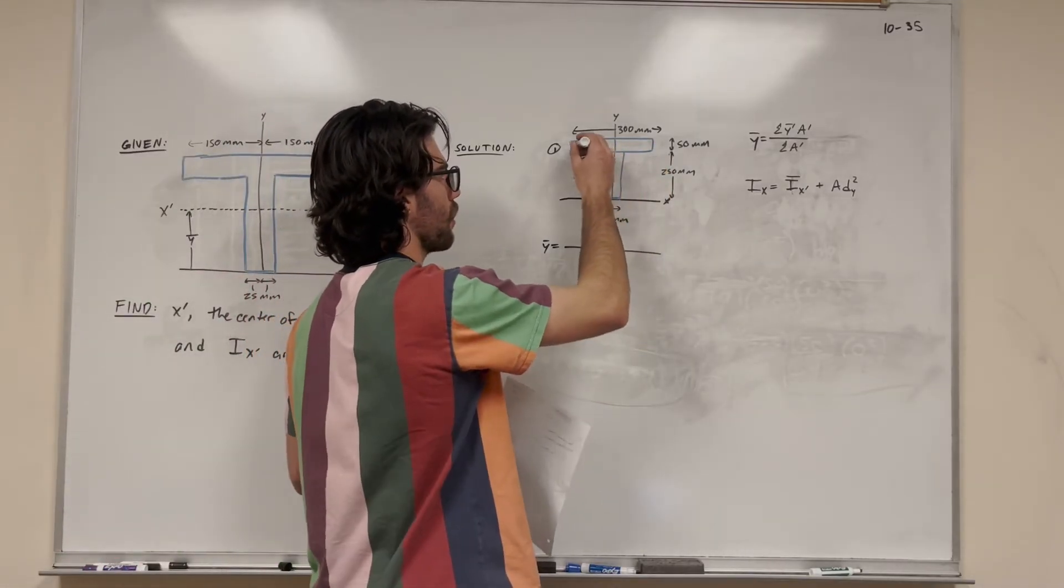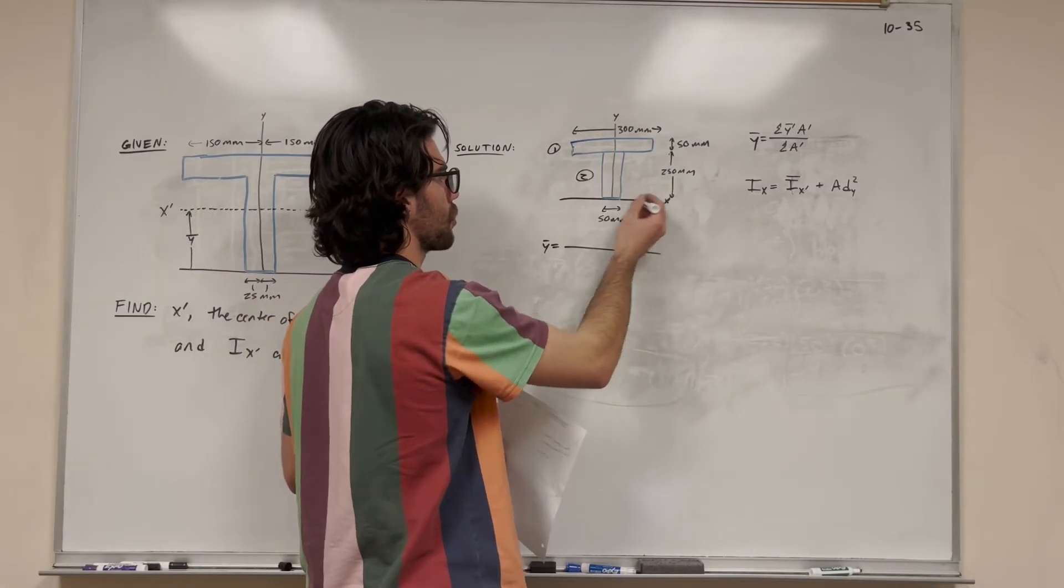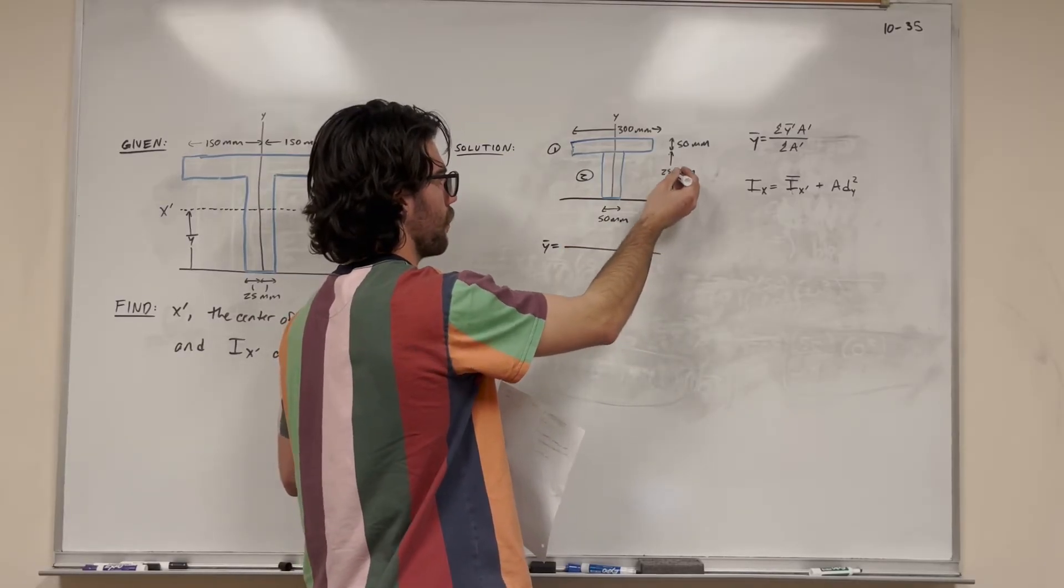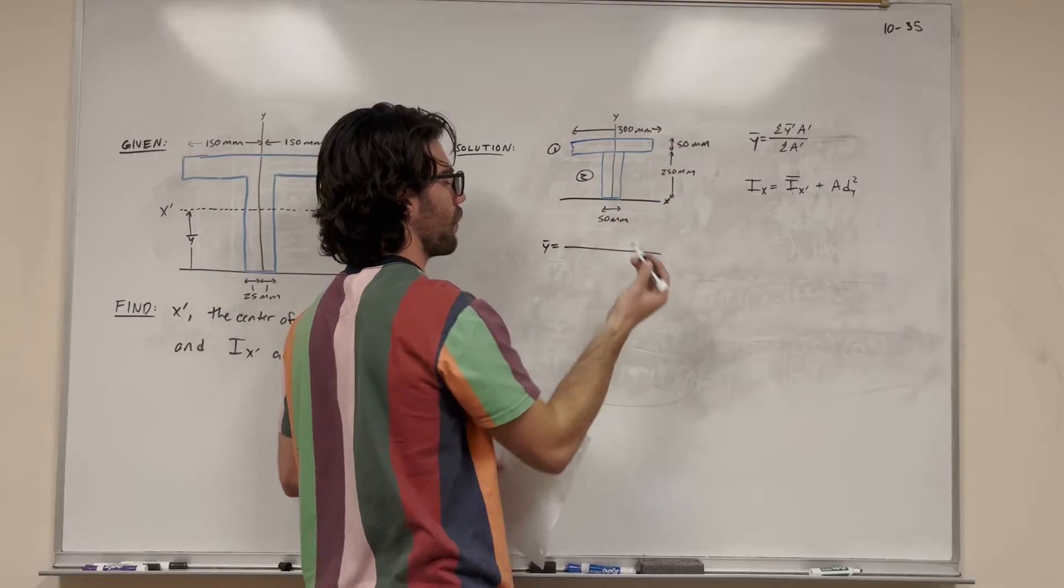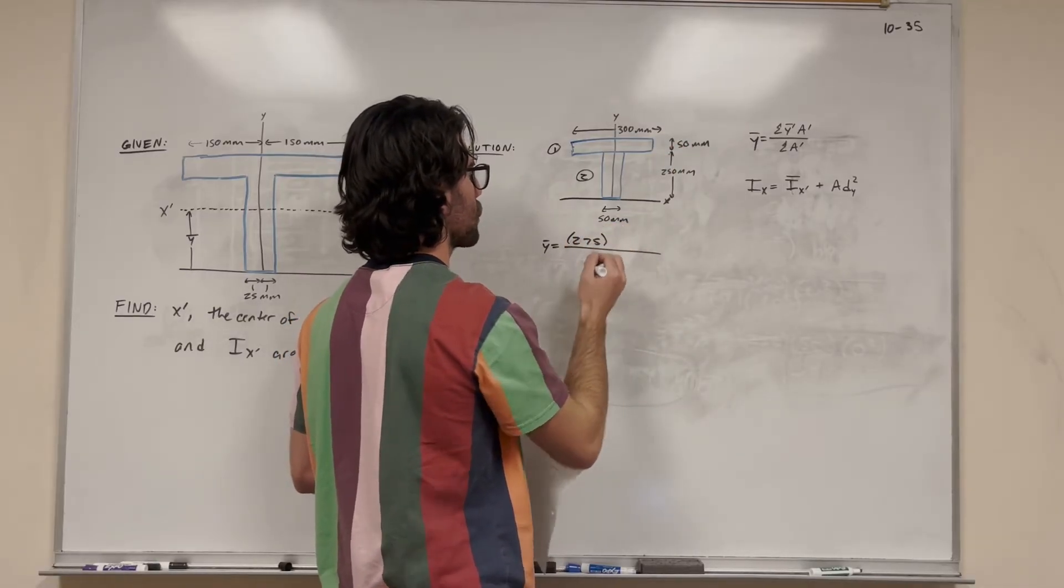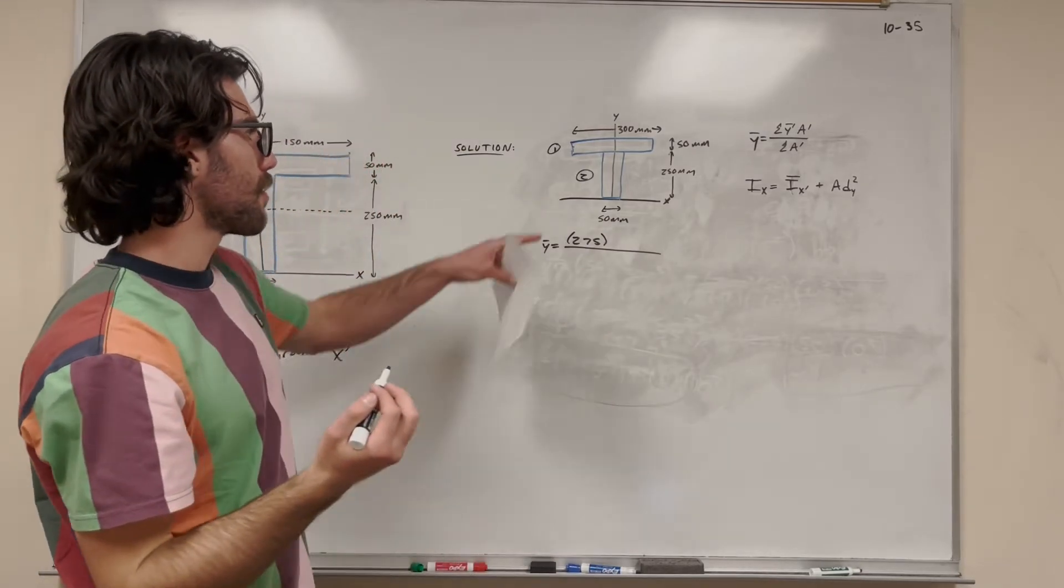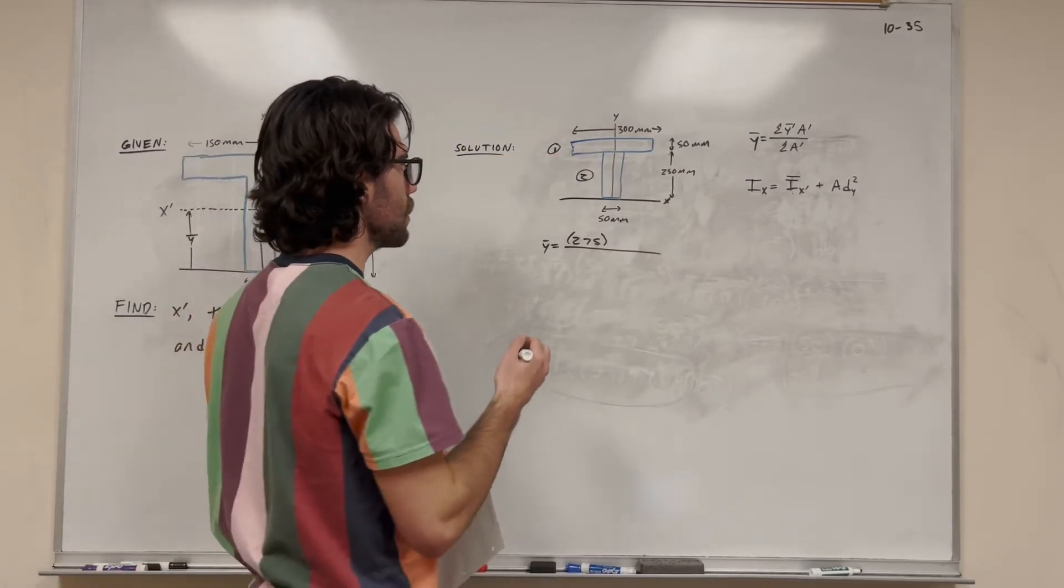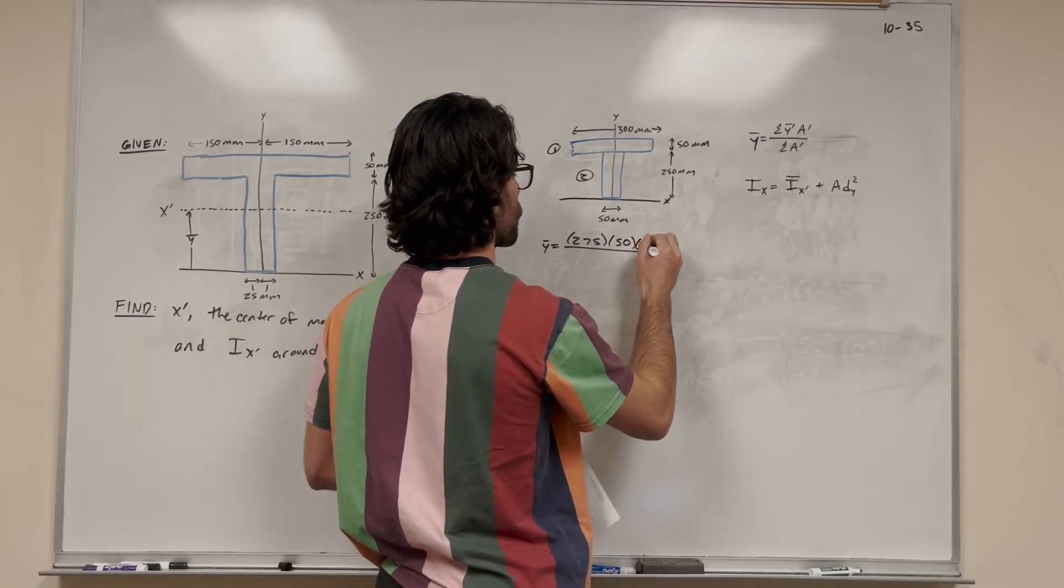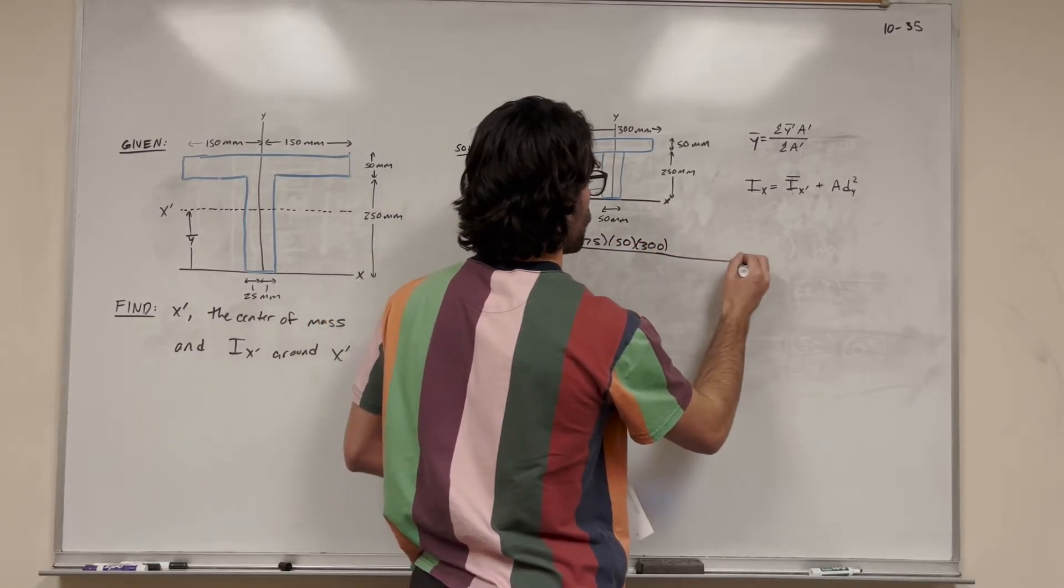But of course, we're not starting from the bottom here. Our neutral x-axis is down here on the bottom. So we're going to need to go 250 millimeters up, then plus 25 millimeters up. So it's actually going to be 275 millimeters is where our y bar prime for the shape number one is going to be. We're going to multiply it by its area, which is just base times height, so 50 times 300.